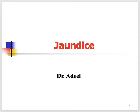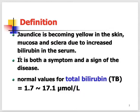We are going to discuss jaundice in this topic of physical diagnosis. Jaundice can be defined as yellowish discoloration of the skin, mucous membrane, and sclera. The reason behind it is simply hyperbilirubinemia — an increased level of bilirubin in the serum.